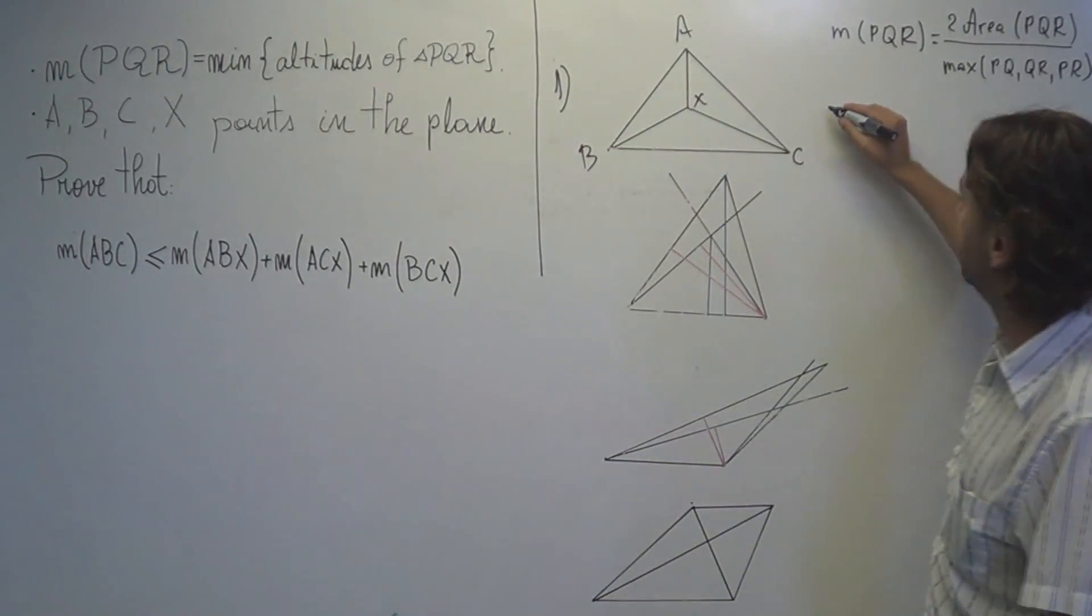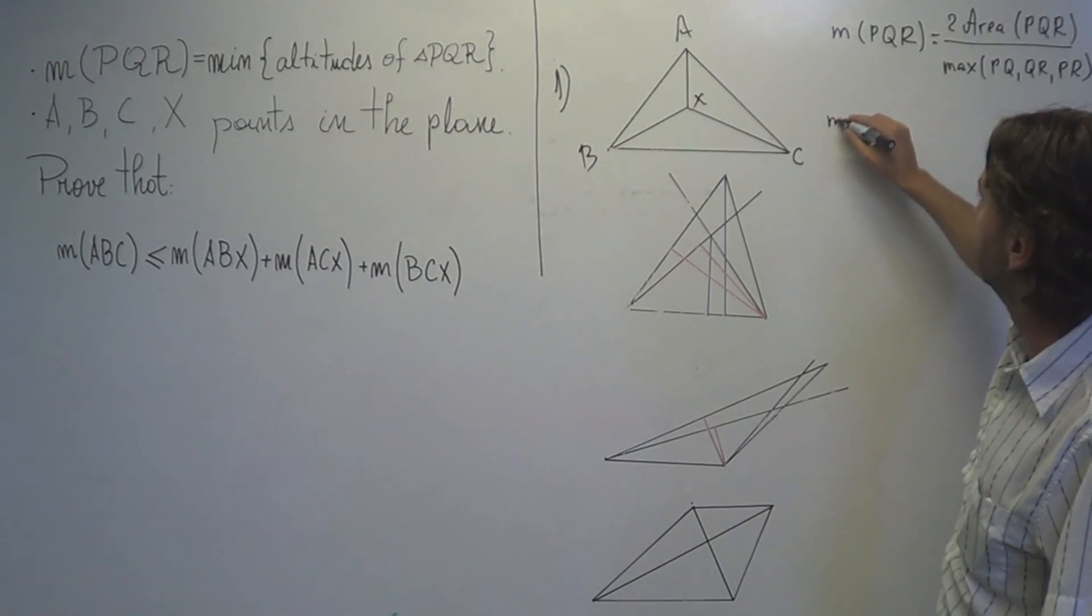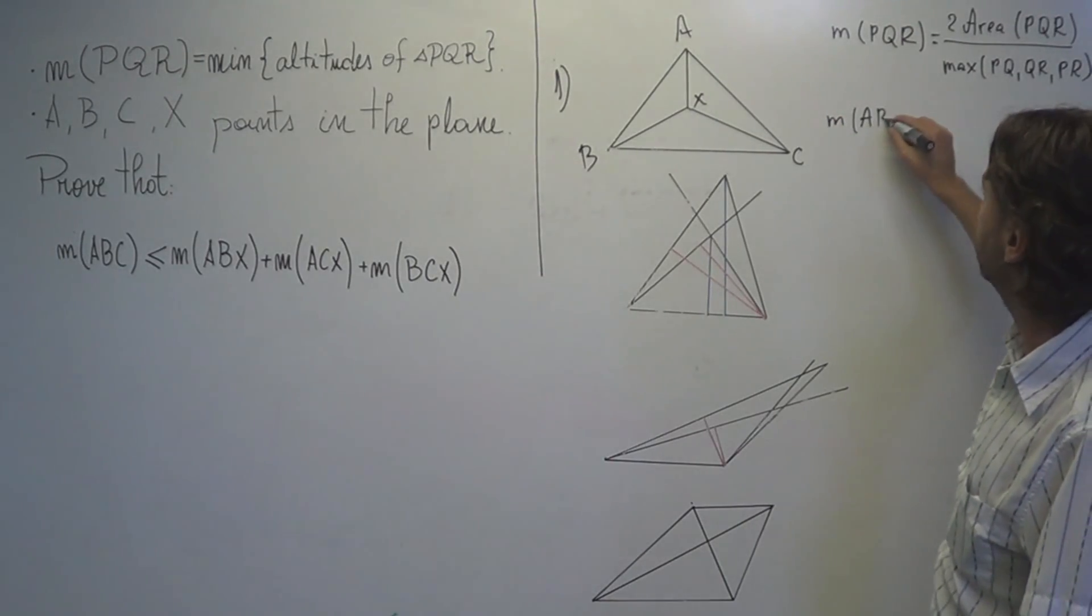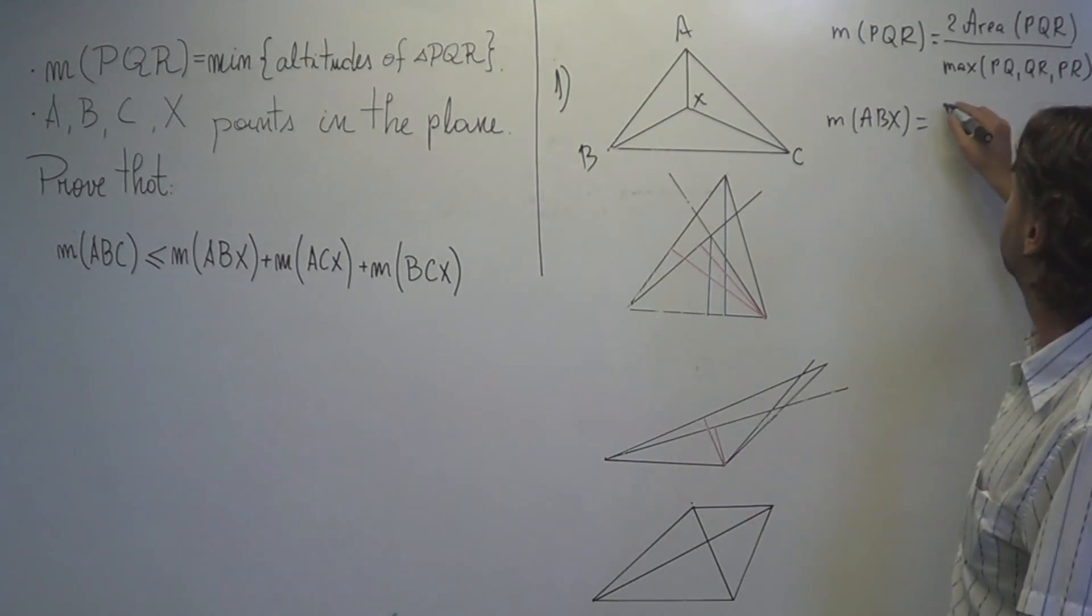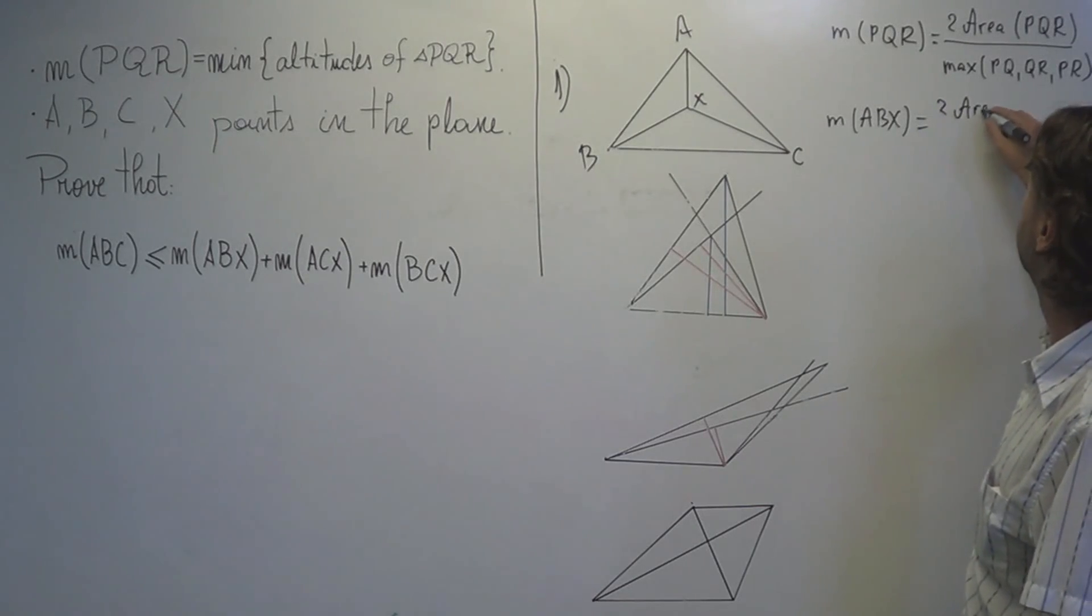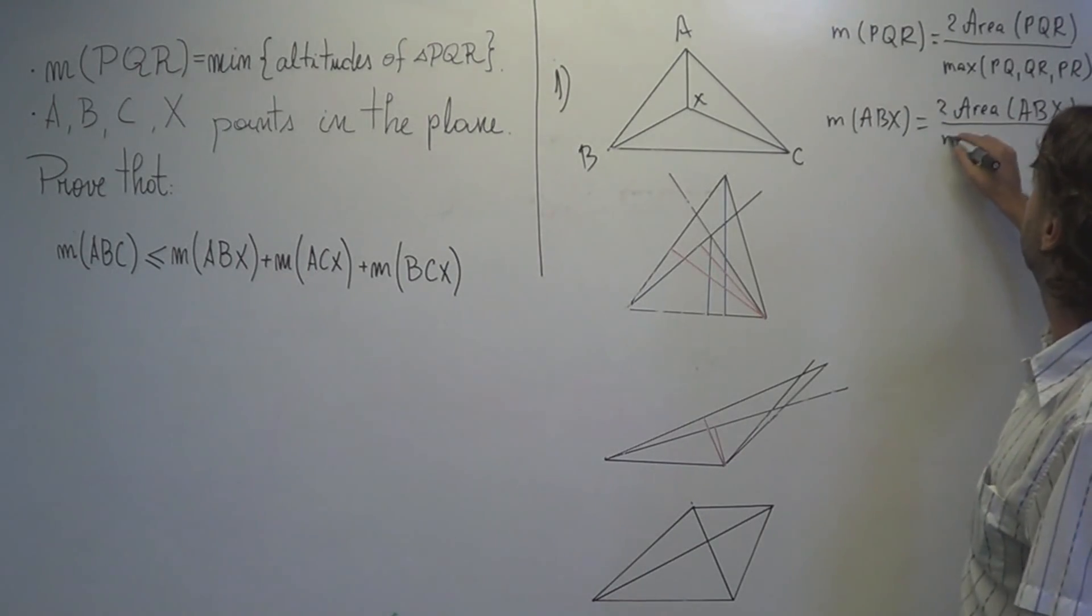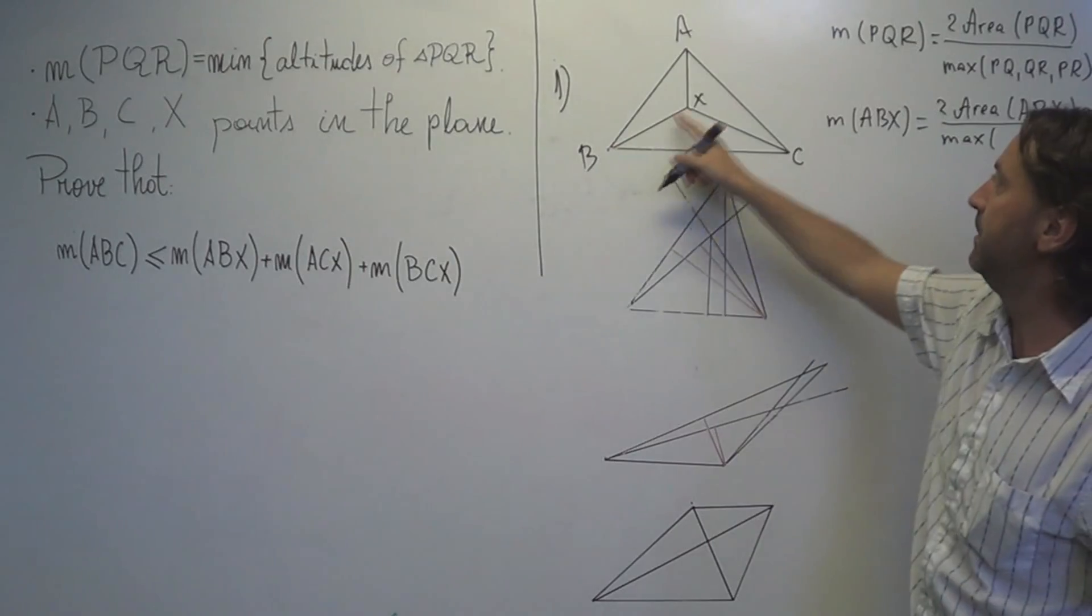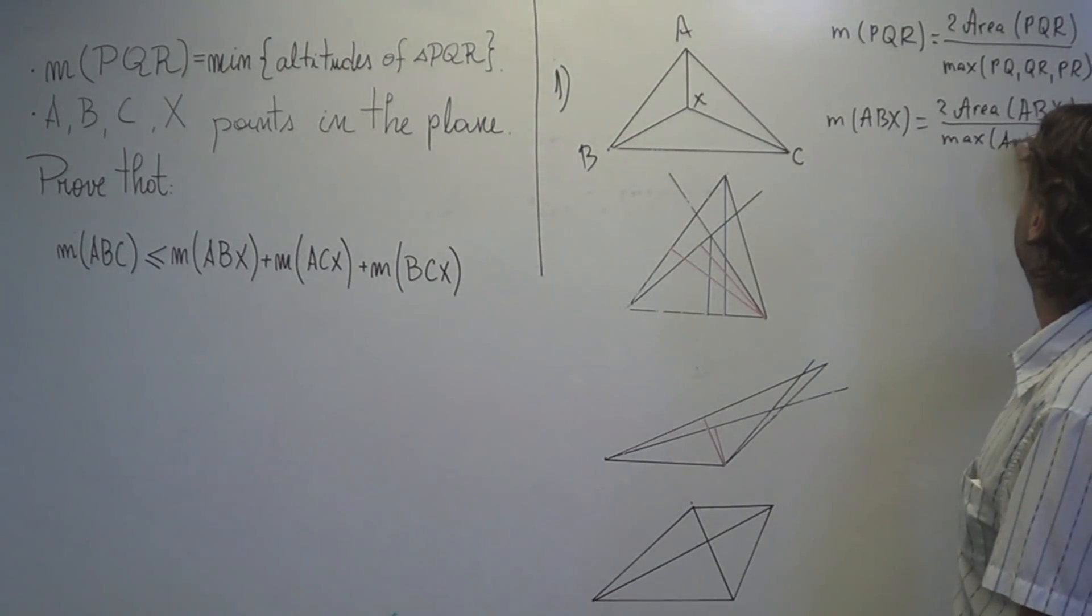Okay, then we can apply this formula to these three values. For example, the first one says that M the triangle of ABX will be equal to two times the area of ABX divided by the maximum of the three sides of ABX: AB, AX and BX.